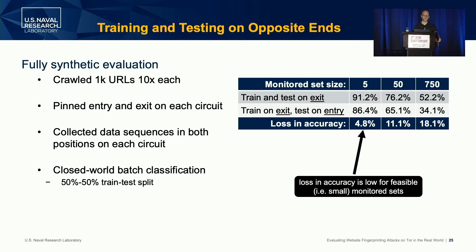Finally, we're interested in the loss in accuracy from training on the exit and moving to the entry side. To be safe, this has to be a fully synthetic evaluation since we're doing predictions on the client side. We crawled 1,000 URLs from previous research, 10 times each, pinning our entry and exit on each circuit so we have the same traffic patterns, and collected data sequences from both positions. This is a closed-world batch classification with a 50-50 train-test split. For monitored set sizes feasible in the real world — sets of size 5 — we see a relatively low loss in accuracy of about 4.8%. As the monitored set increases to 50 and 750, we see 11% and 18% loss in accuracy from moving to the opposite side of the circuit.